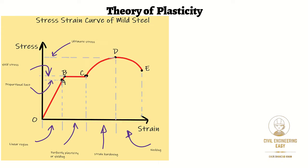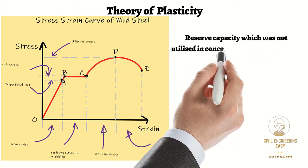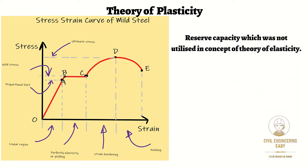From this we got a conclusion that elastic materials have a reserve capacity which was not utilized in the concept of theory of elasticity. For a ductile material like structural steel, members reaching yield at the extreme fiber retain a reserve strength that varies with the shape factor.